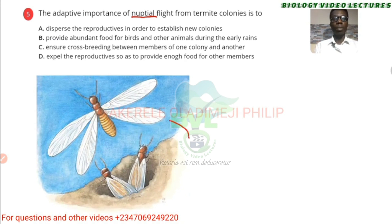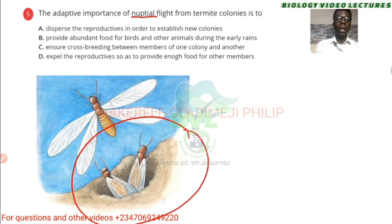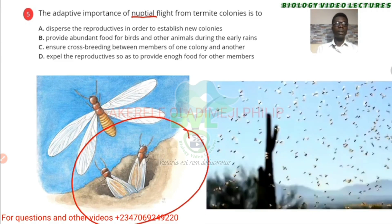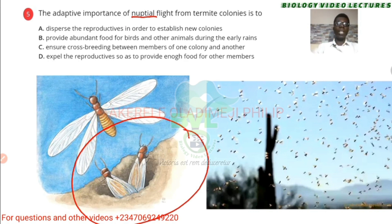When the termite colony is filled up, some of them will develop wings — we call them reproductive wings. What they do is actually fly out of the termitarium like this and fill the whole place. Some will be eaten, some will escape. From each of those, some are male, some are female, so they will get paired. They will go up, meet there, and come down.